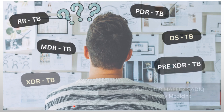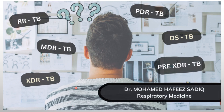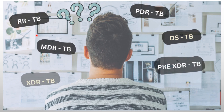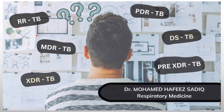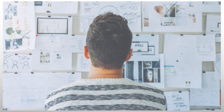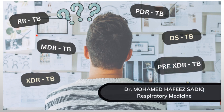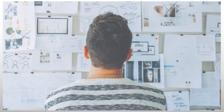If you are watching this video, that means you are confused same as the guy in this picture. What are these terminologies — RR-TB, MDR-TB, XDR-TB? These are the terms given to a TB patient who shows resistance to one or more of the TB drugs.